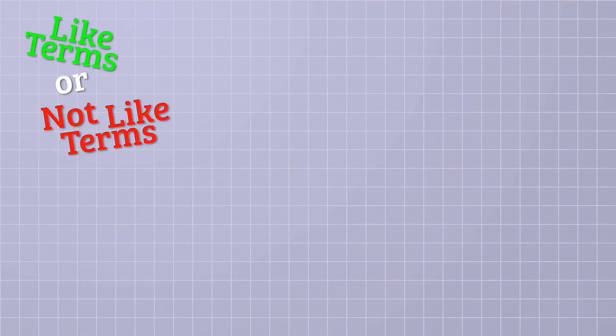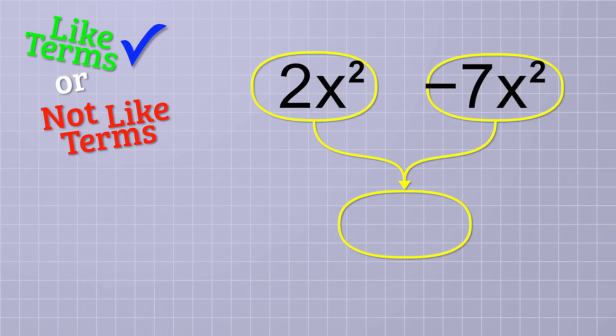Okay, but what about these terms? 2x squared and negative 7x squared. Well, the variable part in both is exactly the same. It's x squared. So yes, these are like terms and we can combine them. Notice that one of the terms is negative, so when we add the number parts, we'll end up with negative 5. So these combine to negative 5x squared.